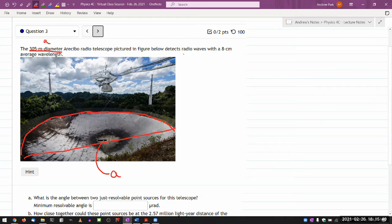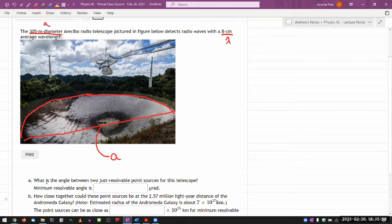So it has detected radio waves with some wavelength lambda, an average wavelength. It asks what is the angle between two dust resolvable point sources for this telescope? And for the criterion of this dust resolvable, we have a criteria described in the textbook, we call it Rayleigh criterion.